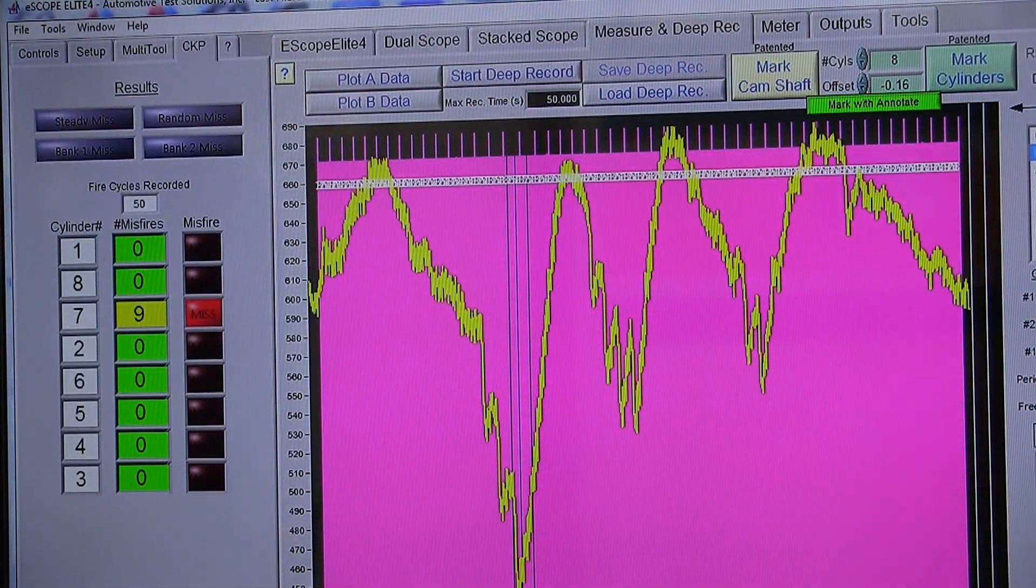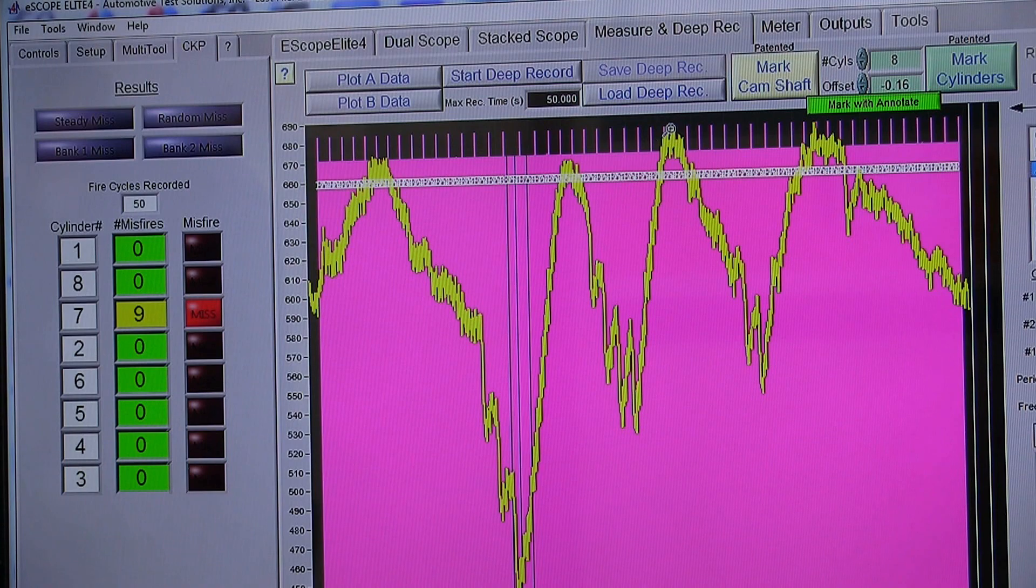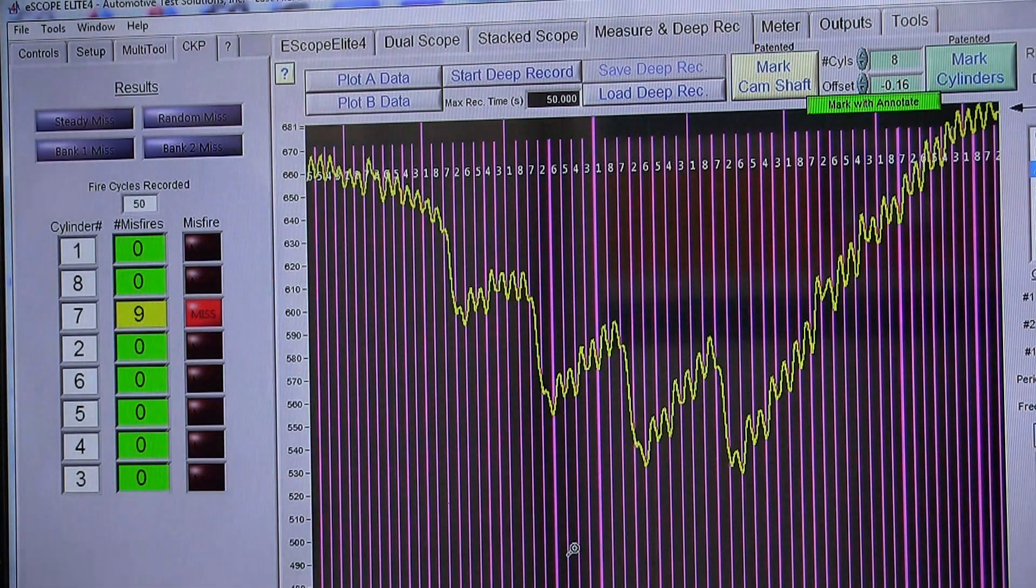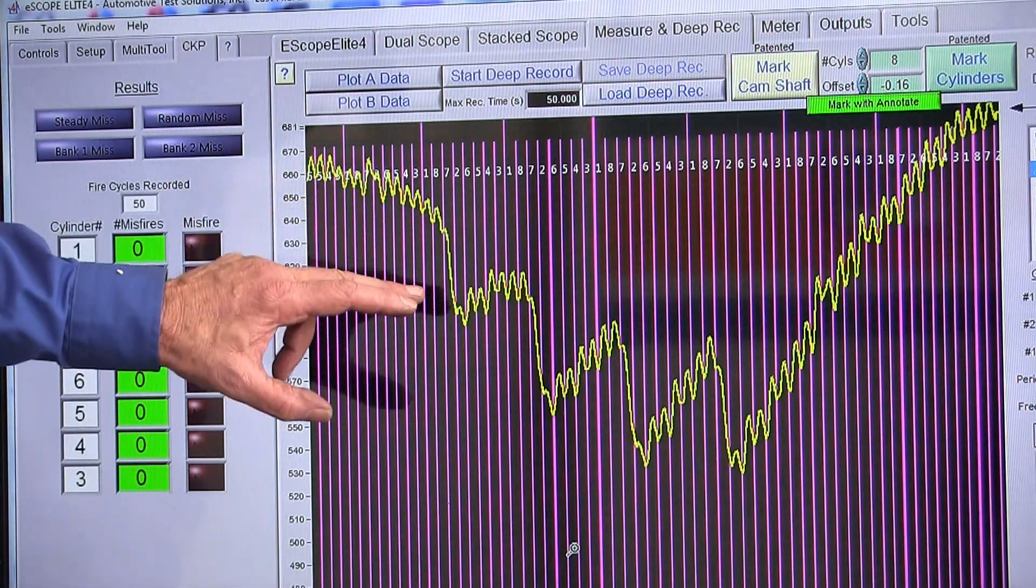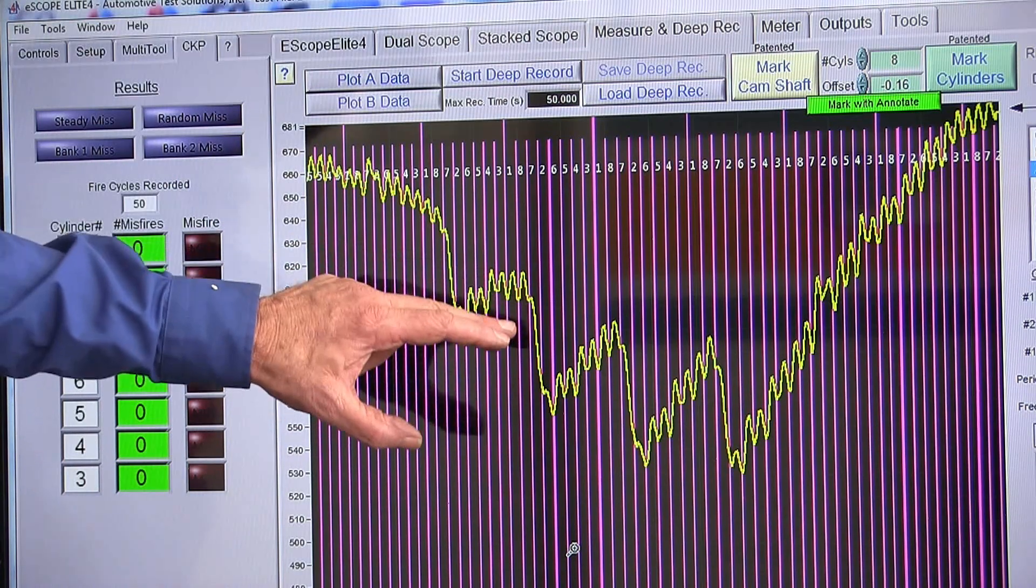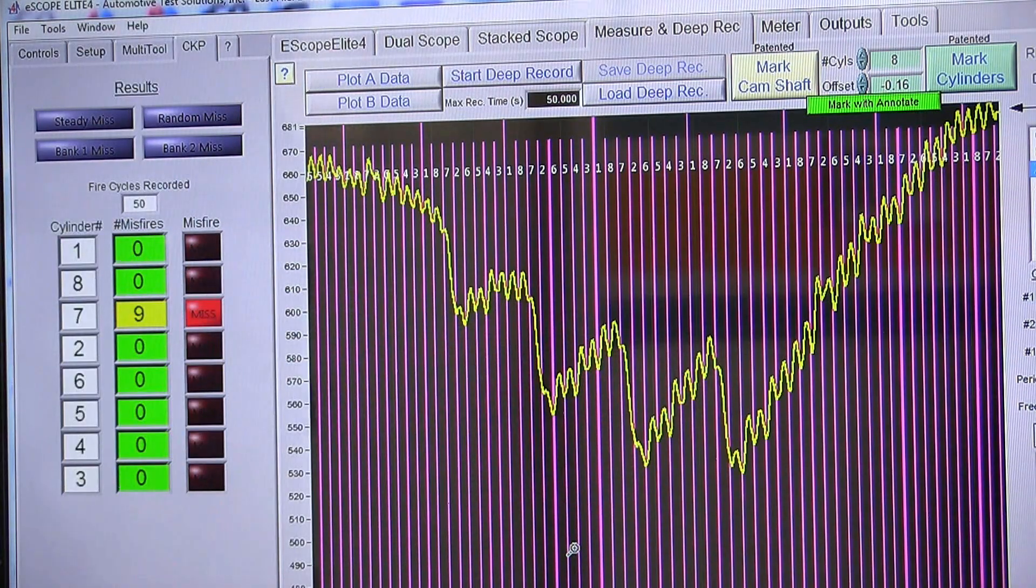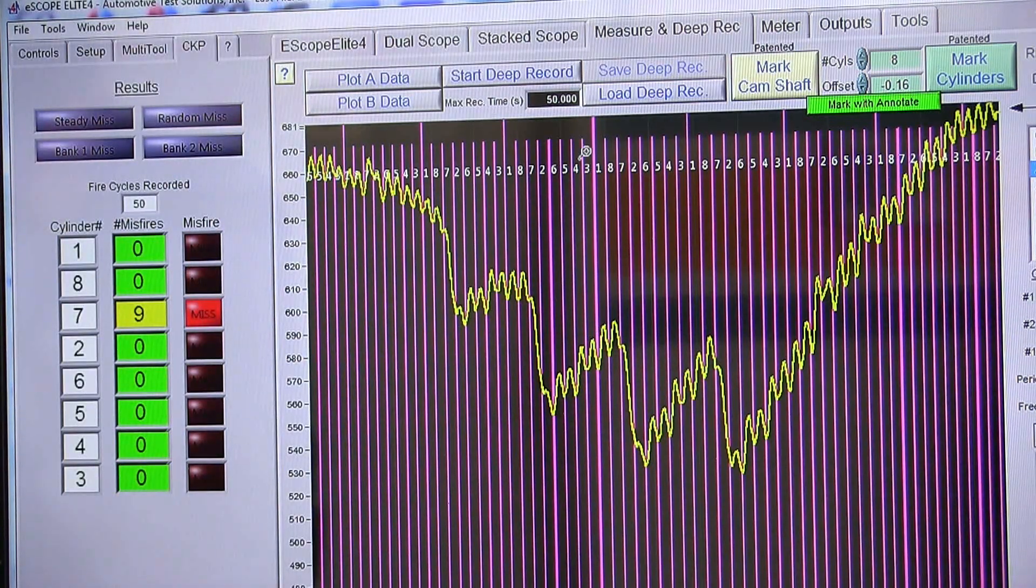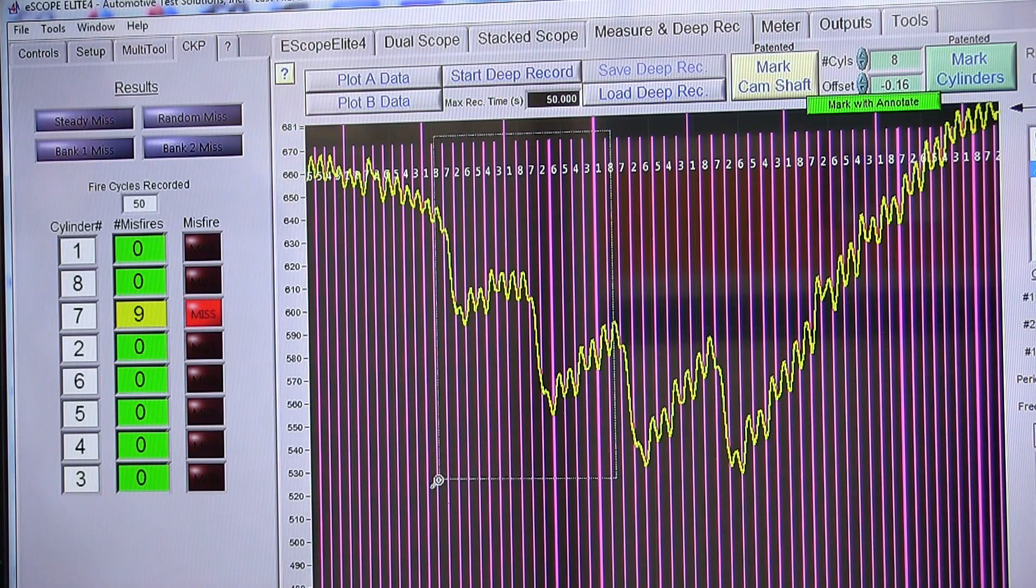What we want to do is we want to take the zoom window and we want to zoom in on this a little bit closer so we can see it. Each time we drop the crank velocity that's a miss. So let's go ahead and zoom in just a little bit more and let's take a look at what we can see here.